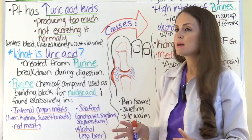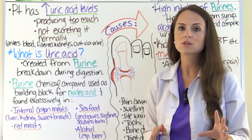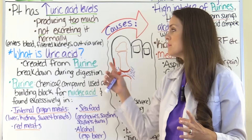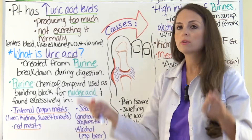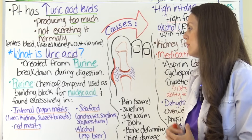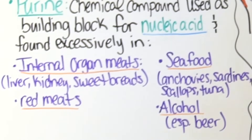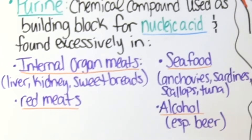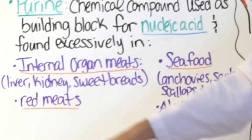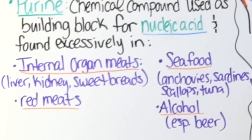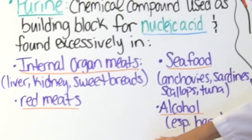For nursing exams, if you're ever asked about gout, chances are you're probably going to be asked a question about foods that are high in purine, so etch these food categories in your mind. What foods are rich in purine? We have internal organ meats — this includes liver, kidneys, and sweet breads, which is either the thymus or the pancreas. Also red meats, seafood like anchovies, sardines, scallops, and tuna, and alcohol, especially beer.